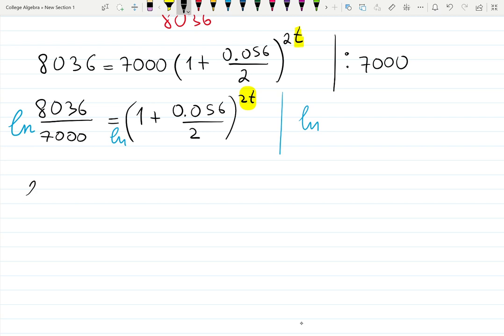Natural log to both sides, that's step two. And then I will have natural log of this constant, whatever it is—you can always calculate at the end or right away, doesn't matter.